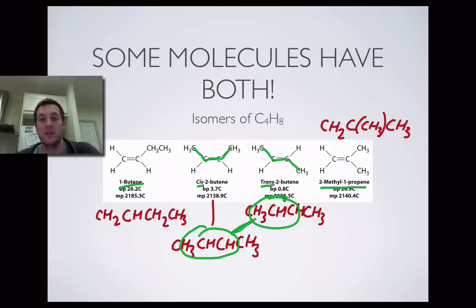There are quite a lot of key points in this film, so it's probably worth watching it again to make sure you understand them all. The next best step is going on to Nomenclature 2, so you can find out more about naming alkenes, and in particular geometric isomers.